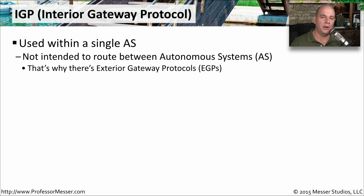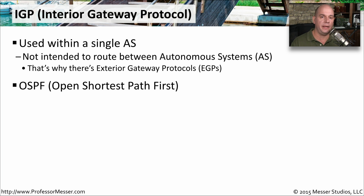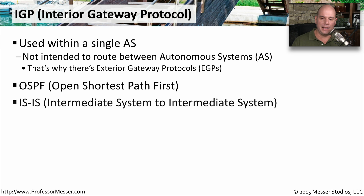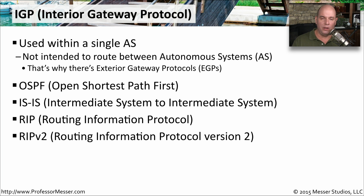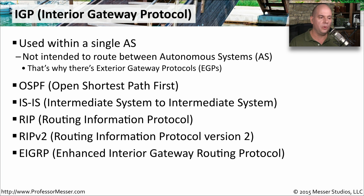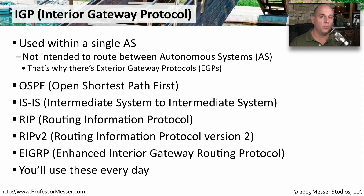An interior gateway protocol is used on our internal network — our own autonomous system. We don't use EGPs to route within our internal system; exterior gateway protocols handle communication across systems. Examples of an IGP include OSPF (Open Shortest Path First), ISIS (Intermediate System to Intermediate System, used by many service providers), RIP (Routing Information Protocol — generally RIPv2 today), and EIGRP, which is Cisco's Enhanced Interior Gateway Routing Protocol for internal gateways. If you're managing a routed network with dynamic routing, you're probably working with one of these every day.